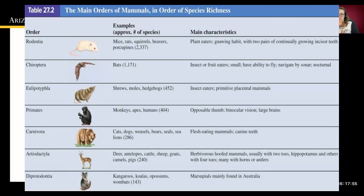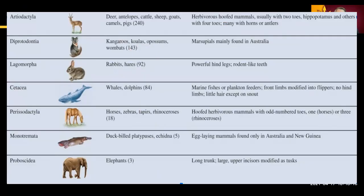Artiodactyla includes deer, antelope, cattle, sheep, goats, and camels — herbivores that have hooves, usually with two toes, though hippopotamus and some others have four toes. Some of them have horns or antlers. Diprotodontia includes kangaroos, koalas, possums, and wombats, which are marsupials mainly found in Australia. Lagomorpha includes rabbits and hares, which have powerful hind legs and incisor-like teeth in the front.